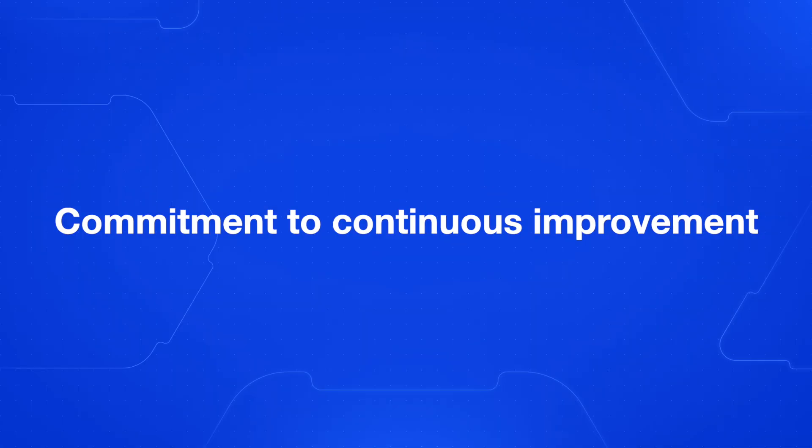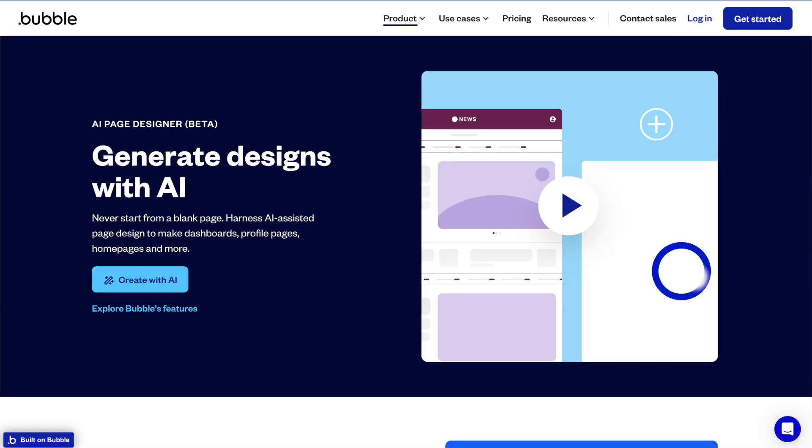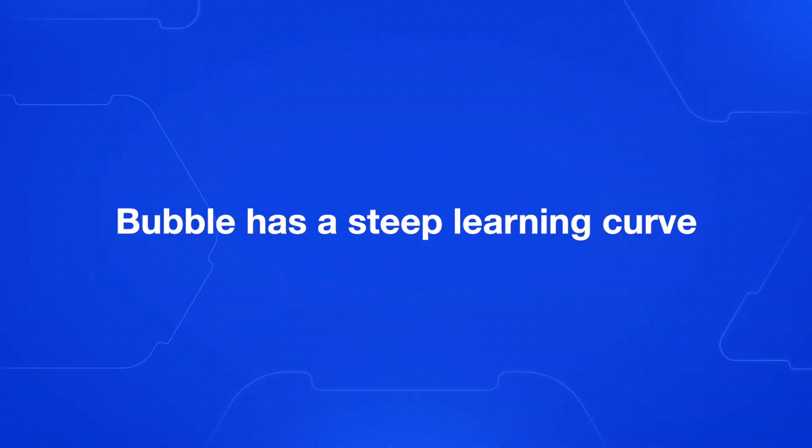One of the things I love most about Bubble is their commitment to continuous improvement. For example, Bubble just released a new AI page builder feature which helps users create web pages more quickly and easily — you describe the type of page you want and Bubble's AI generates a customized page design based on that description. I've used it and it works pretty well, especially for things like dashboards or landing pages. While Bubble is incredibly powerful, it does have a steeper learning curve, but the investment in learning is well worth it given the platform's capabilities.